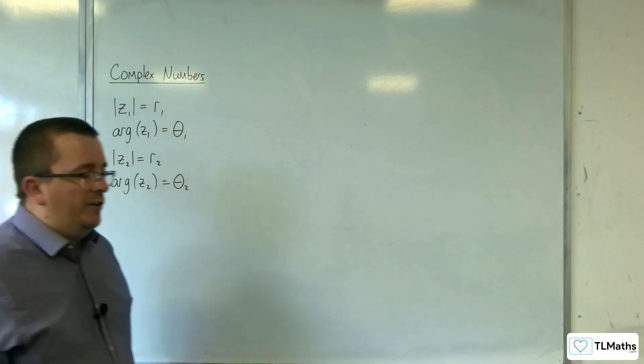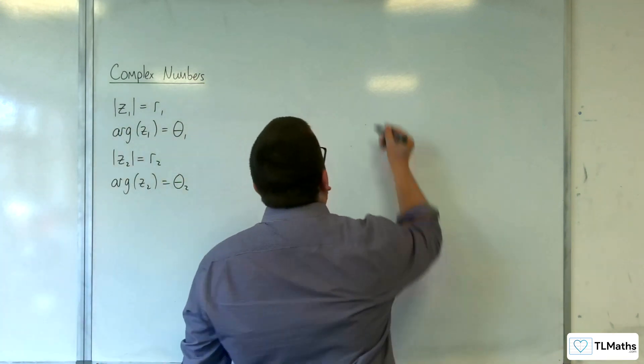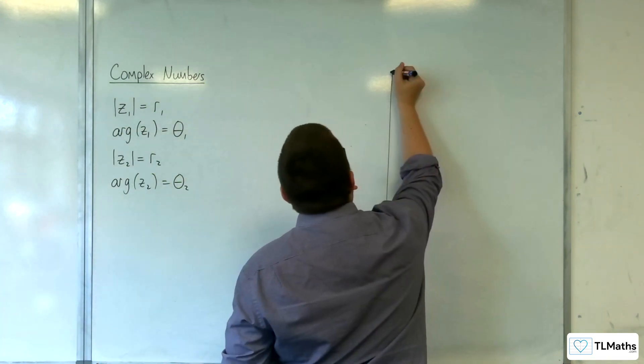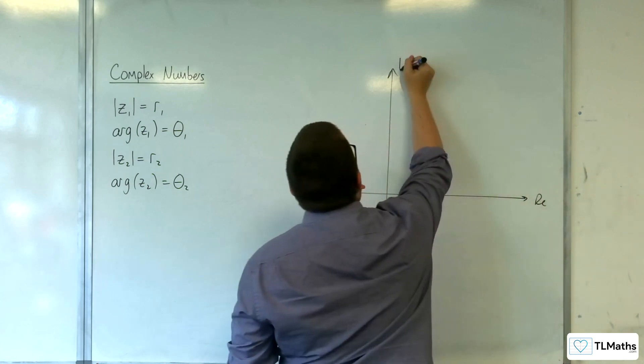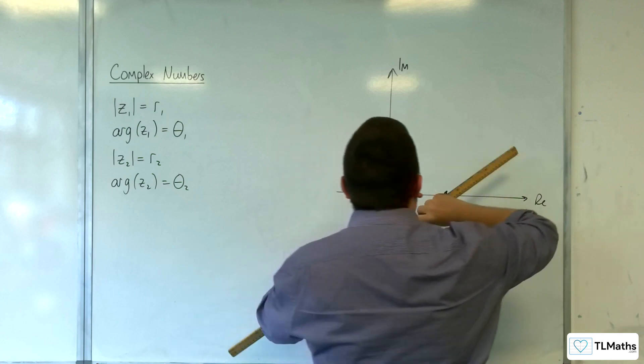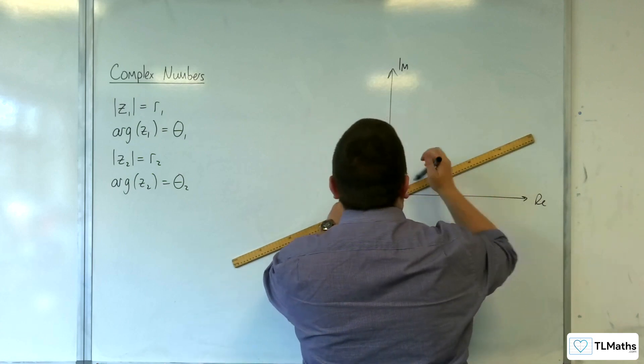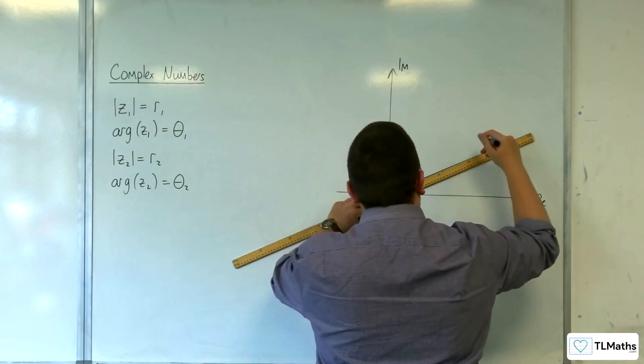So let's just start off with those. If I draw an Argand diagram, and on the Argand diagram, I draw Z1. Let's say here is Z1.